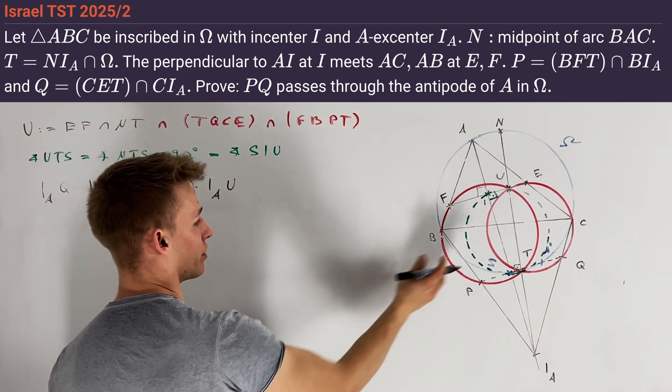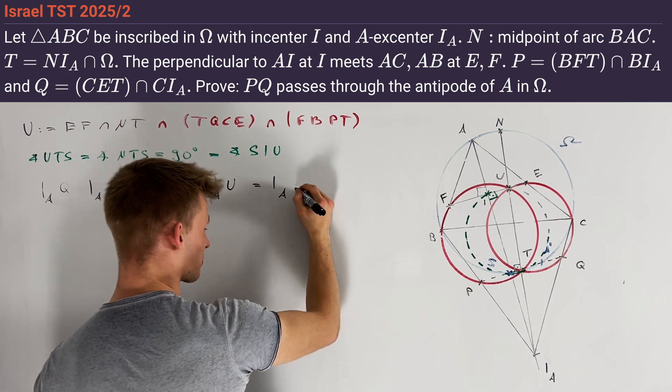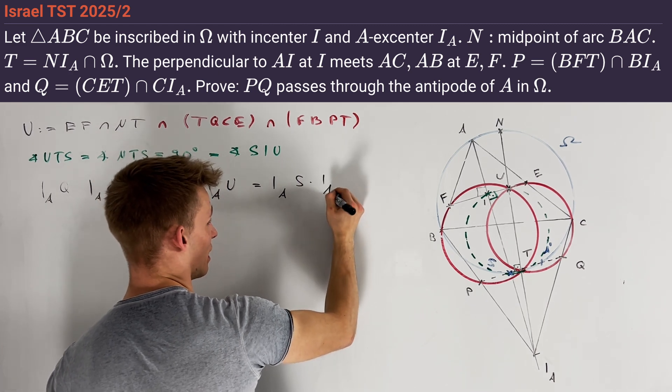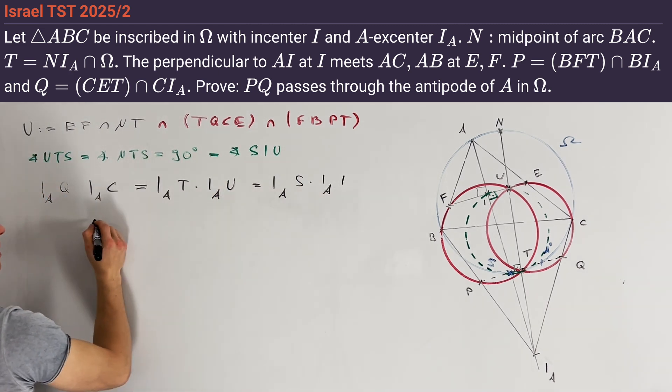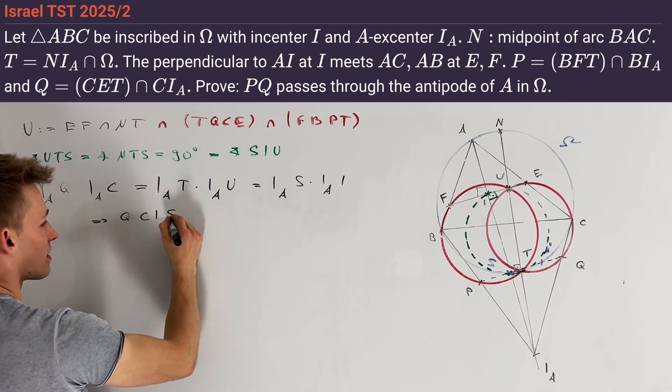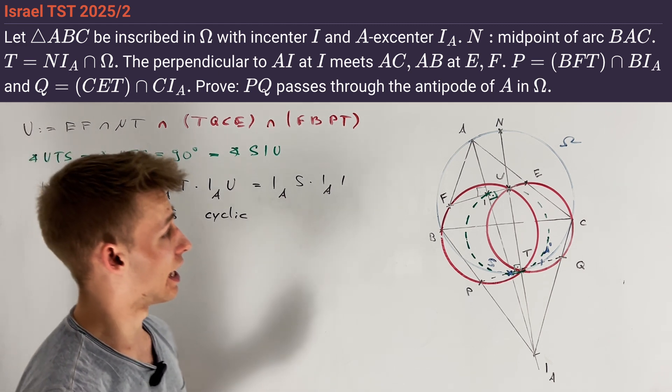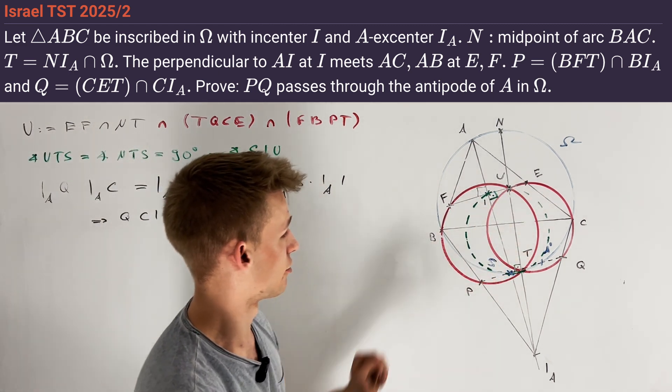Now, by power of a point on the green circle, this is equal to I_AN times I_AS. This implies that Q, C, I, S form a cyclic quadrilateral.